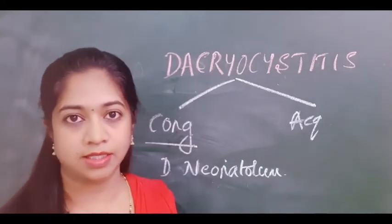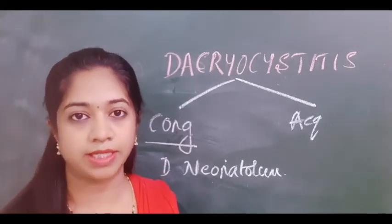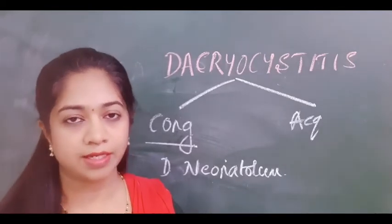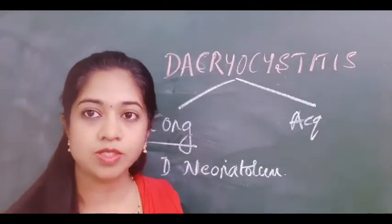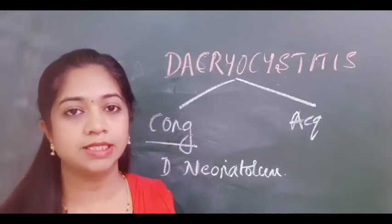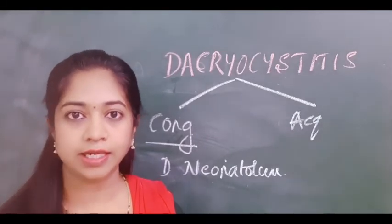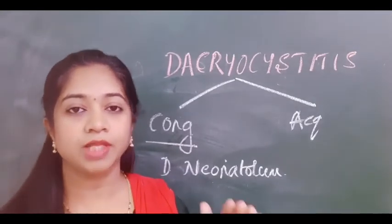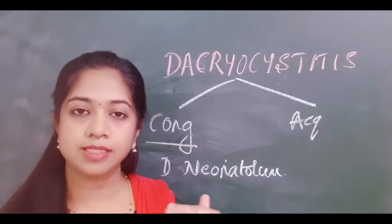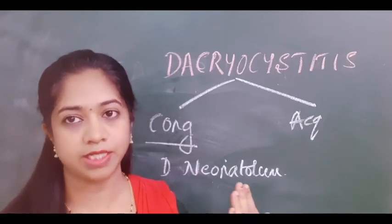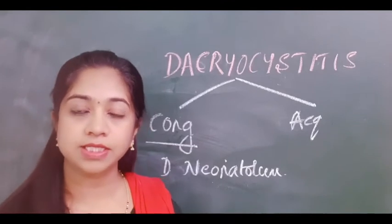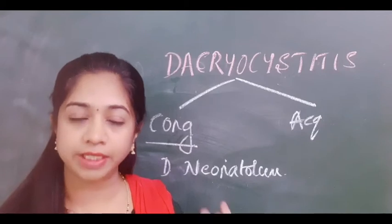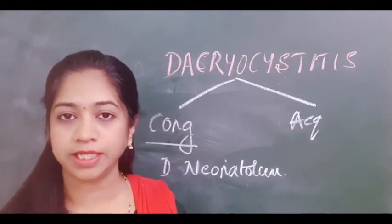What causes congenital dacryocystitis? Normally, as you know from anatomy, there is a nasolacrimal duct draining the tear film from the lacrimal sac to the inferior meatus and thereby into the nasopharynx. In newborns, in about 5 to 20% of cases, this nasolacrimal duct is either partially canalized or there is obstruction at the valve of Hasner, which is the valve present at the inferior end of the nasolacrimal duct. Sometimes there can also be obstruction at the superior part of the nasolacrimal duct.